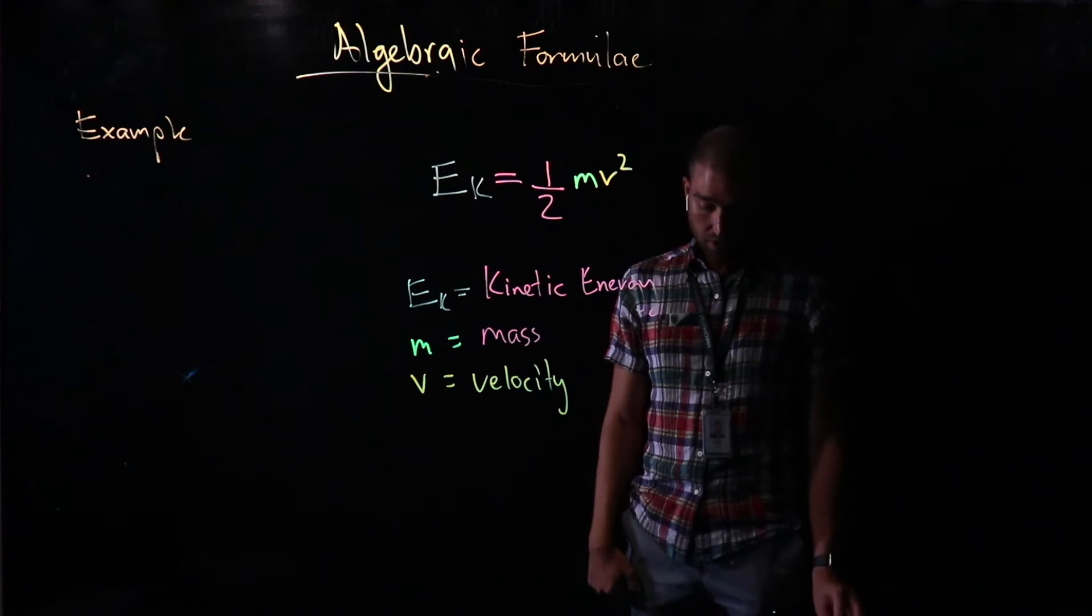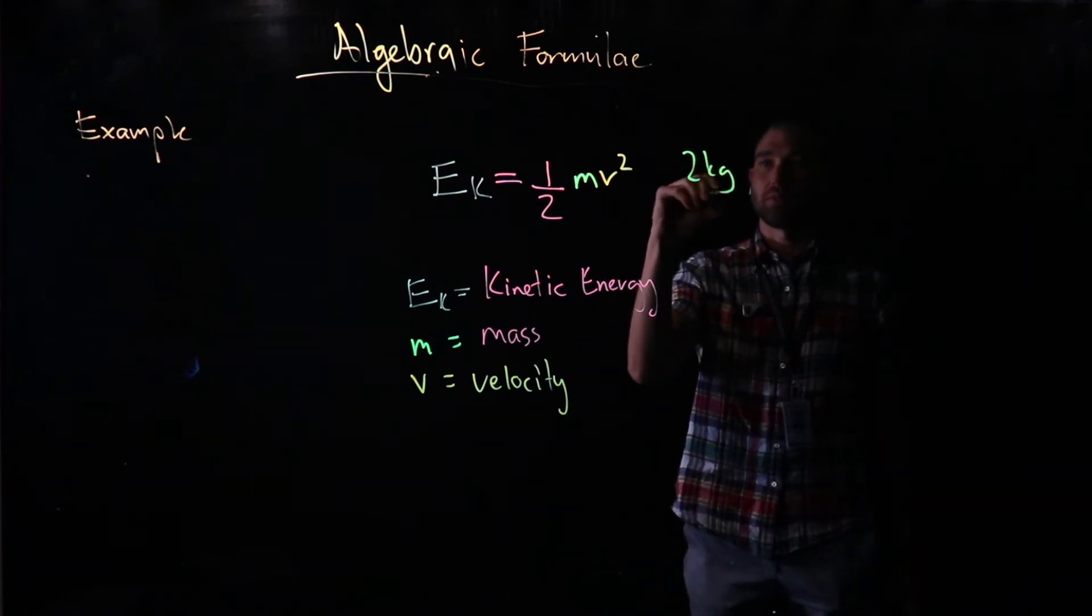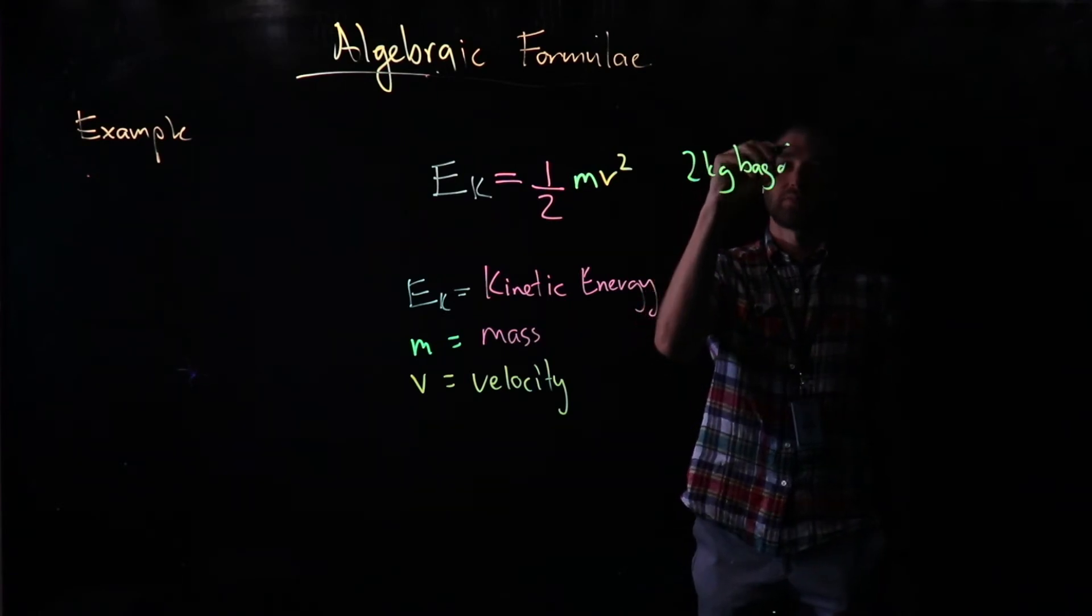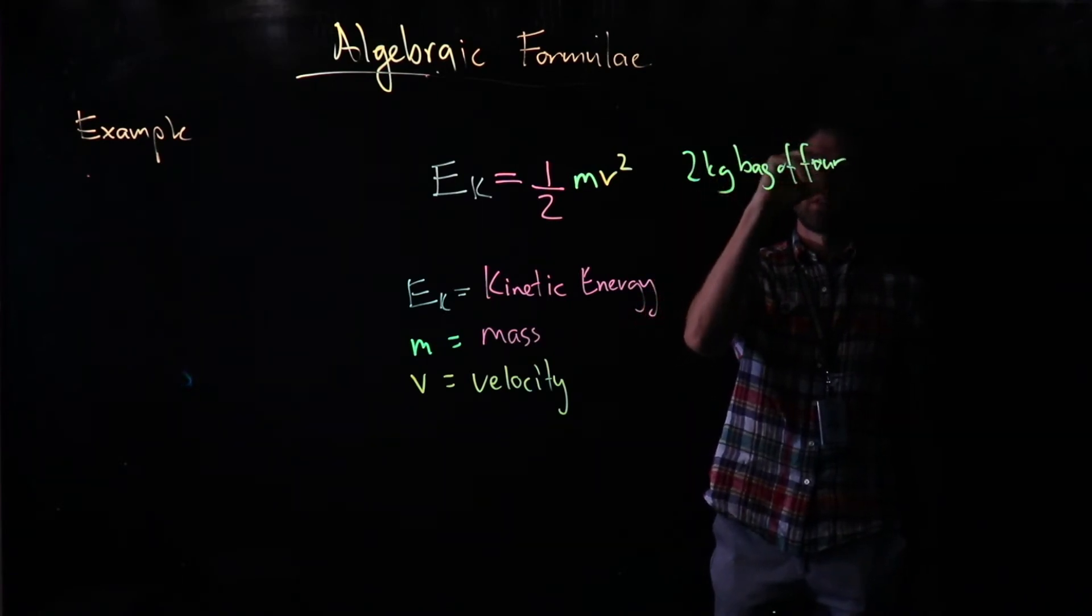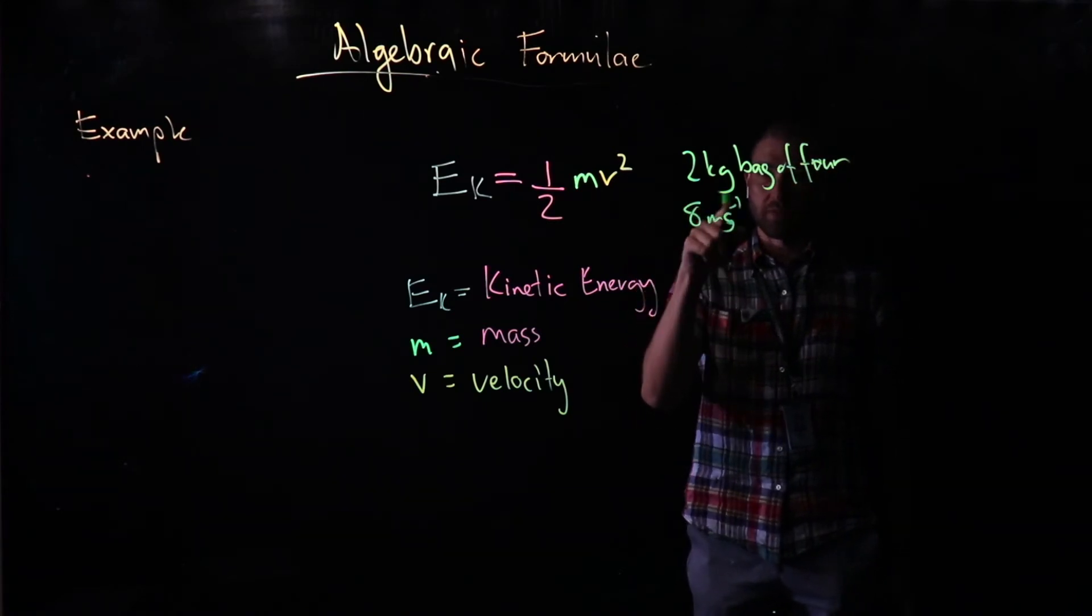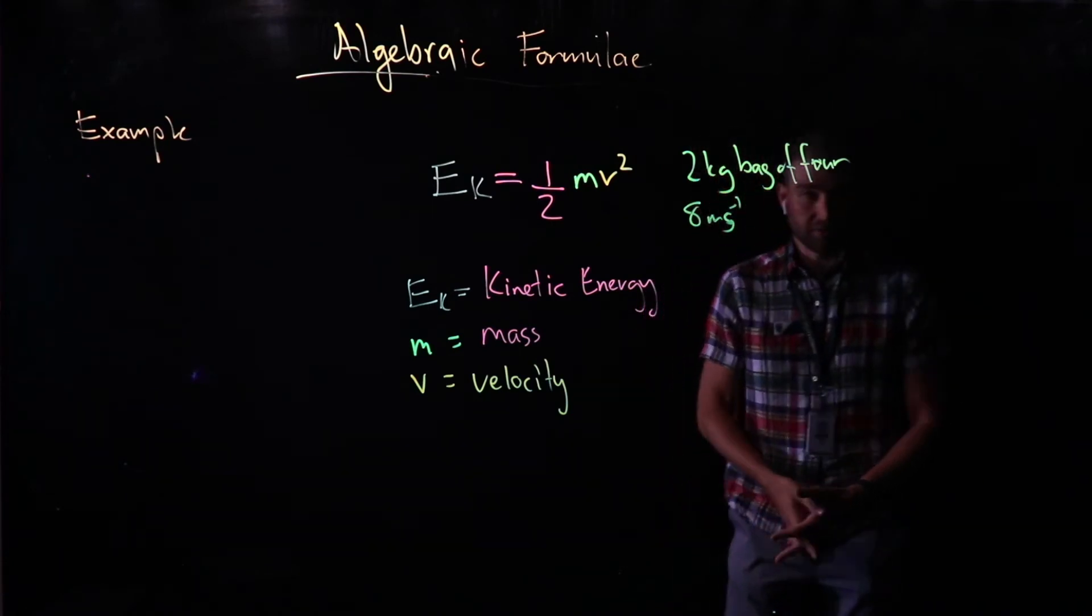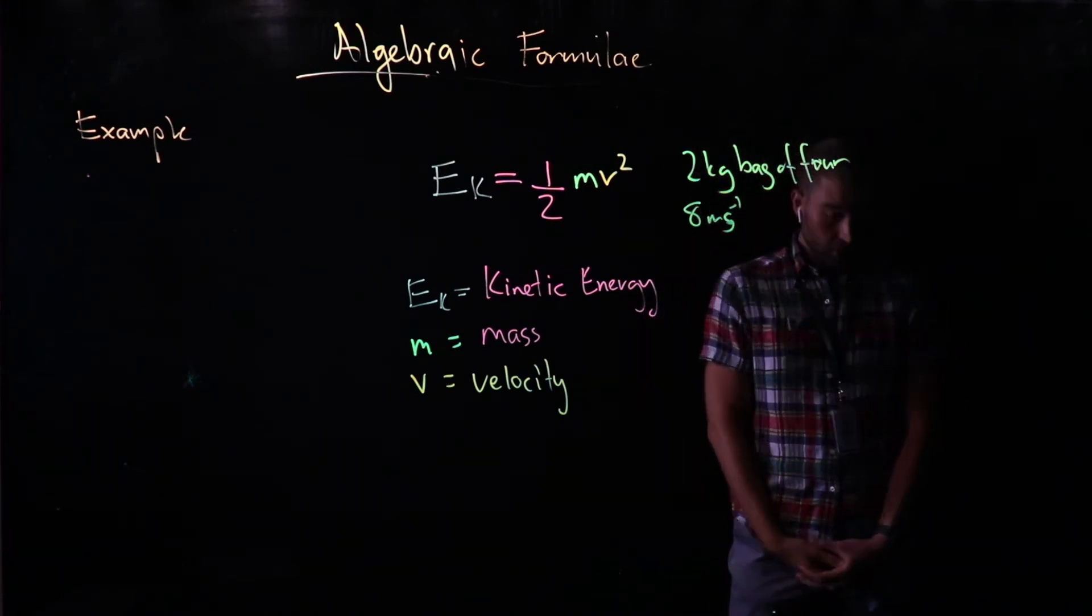Let's do a question. We've got a 2 kilogram bag of flour, and it is going 8 metres per second. ms⁻¹, that's how we say metres per second. Every second, it travels 8 metres. So let's solve this equation. I'm going to use my information over here.